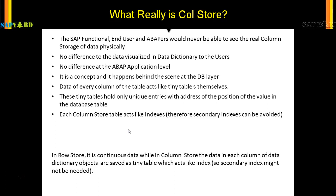So what does the column store do? The column store stores the unique entries with the address of the position of the value in the database table. For example, take a material number 10, material number 20, and another material number 20 in a PO. The column store will hold material number 20's position as 2 and 3. We will see this in the next slide, which will be more clear.